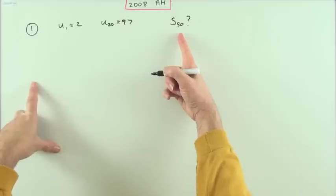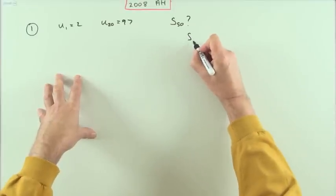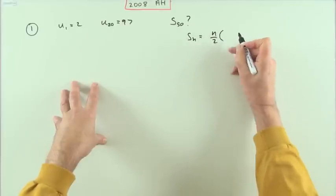In order to get the sum of the first 50 terms, I need to use the formula. The sum to n terms is n over 2 times 2a plus n minus 1 times d - the first plus the last.